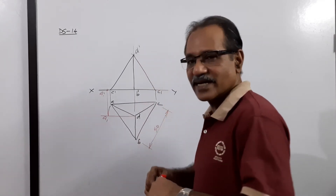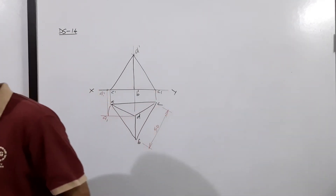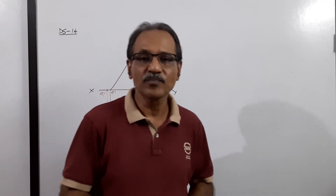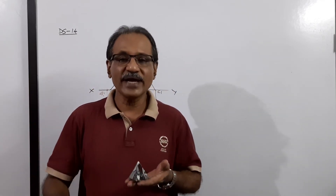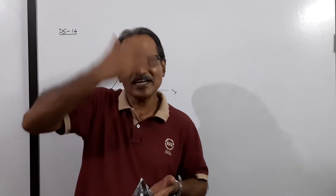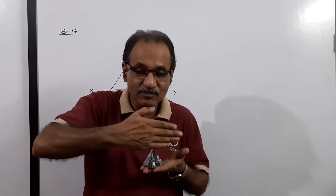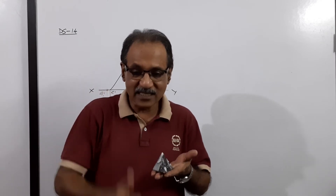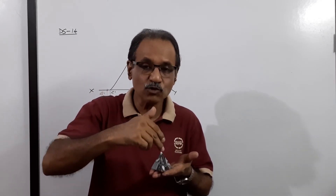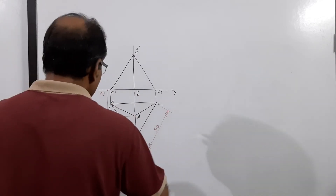Now, the tetrahedron is cut by a cutting plane — a vertical cutting plane parallel to VP, passing through the axis, which is vertical. That means the cutting plane passes through D.